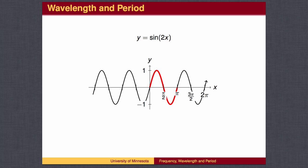For y equals the sine of 2x, the wave should be twice as narrow, so that instead of going through a full wave every 2 pi, it goes through a full wave twice as fast, or every pi. The wavelength, or period, is pi.